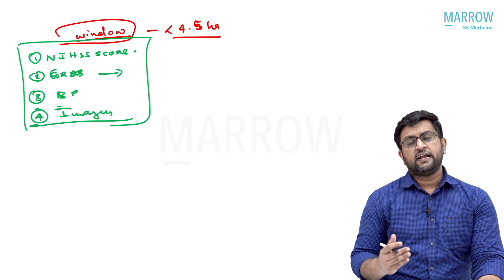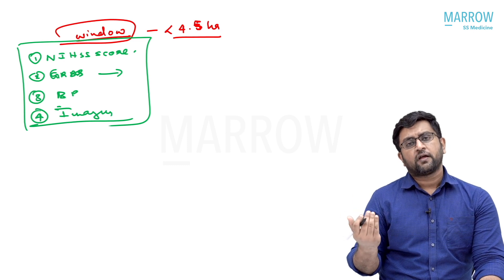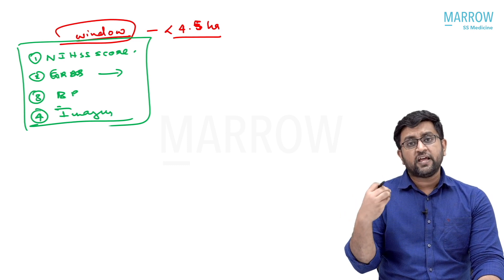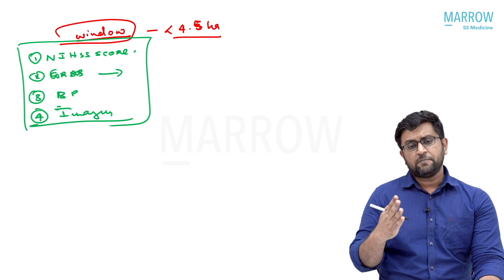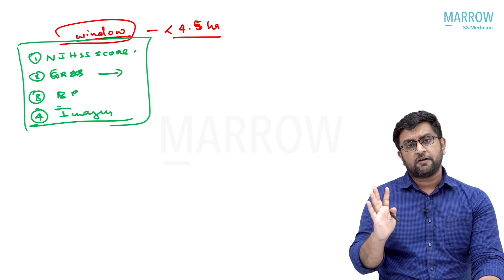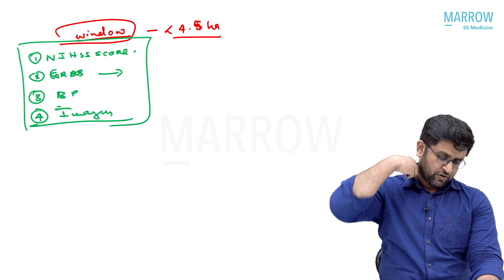ECG and troponin may be done, but it should not delay your decision for thrombolysis. You take a CT, see the patient, GCS score, NIHSS score, GRBS, blood pressure, then you shift the patient for imaging.